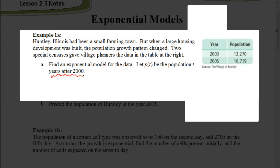So we're going to treat these as two coordinates. But we're not going to treat them as we see them. In other words, our x value for a year is not going to be 2003. It's going to be 3, because that represents 3 years after the year 2000. And the y value is going to be 12,270. And then the other coordinate for the year 2005, well, that's five years after the year 2000. The population was 16,719.